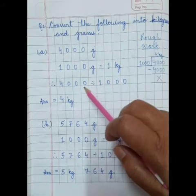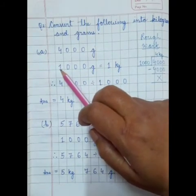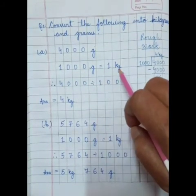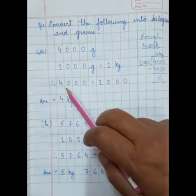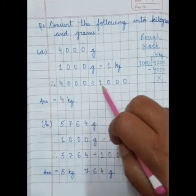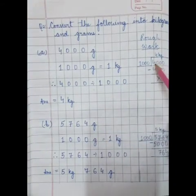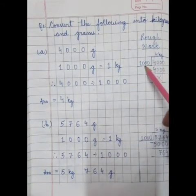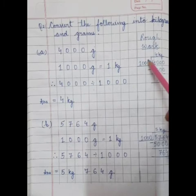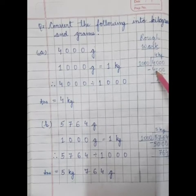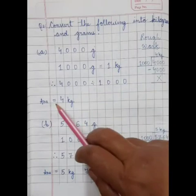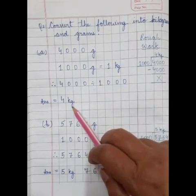So we will follow some steps. First step is 1000 gram is equal to 1 kg. Therefore, 4000 divided by 1000. For this, we will do rough work. 4000 divided by 1000. 1000 fours are 4000. So, 4 kg. 4 kg is our answer.